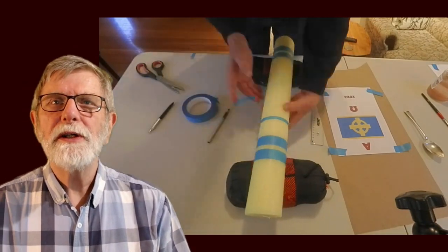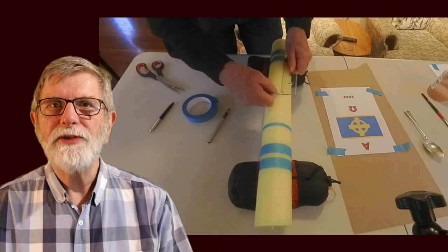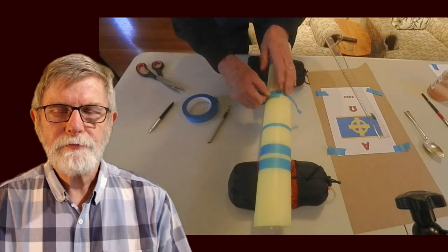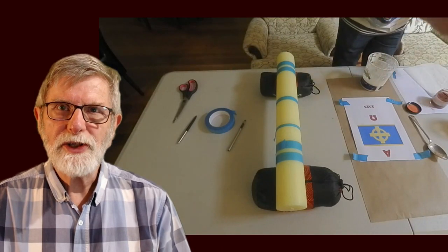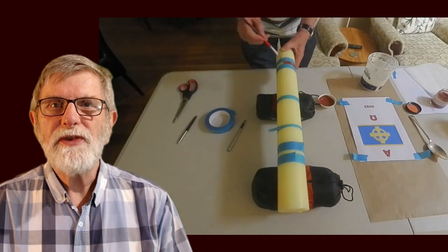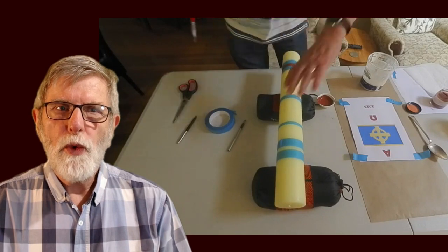So the gesso that I'm applying is made from rabbit skin glue. Now it's rabbit skin glue, one part to 15 parts of water, and then 24 parts of whiting.